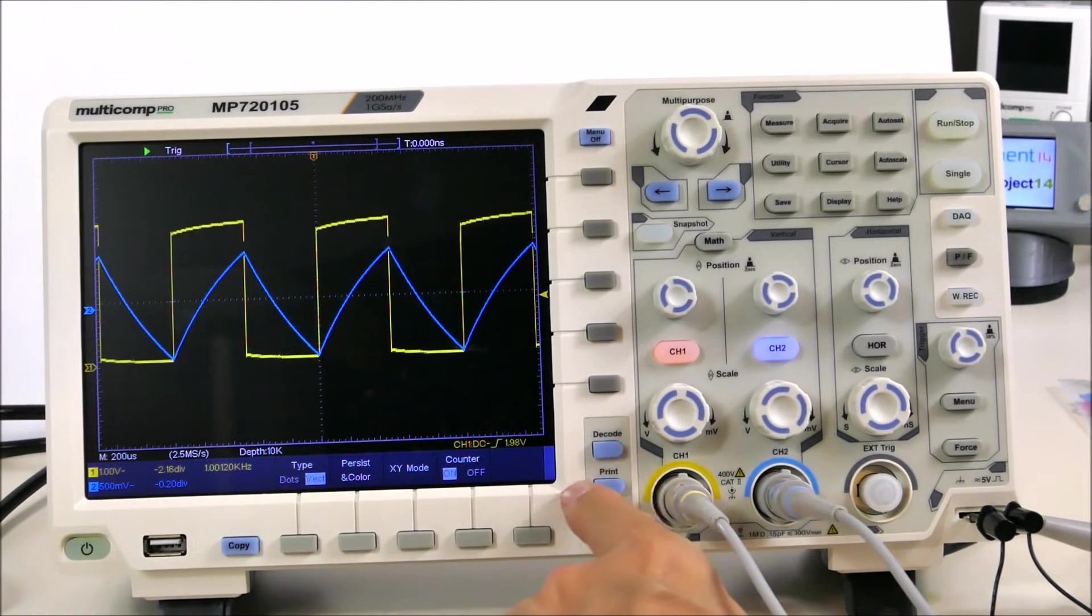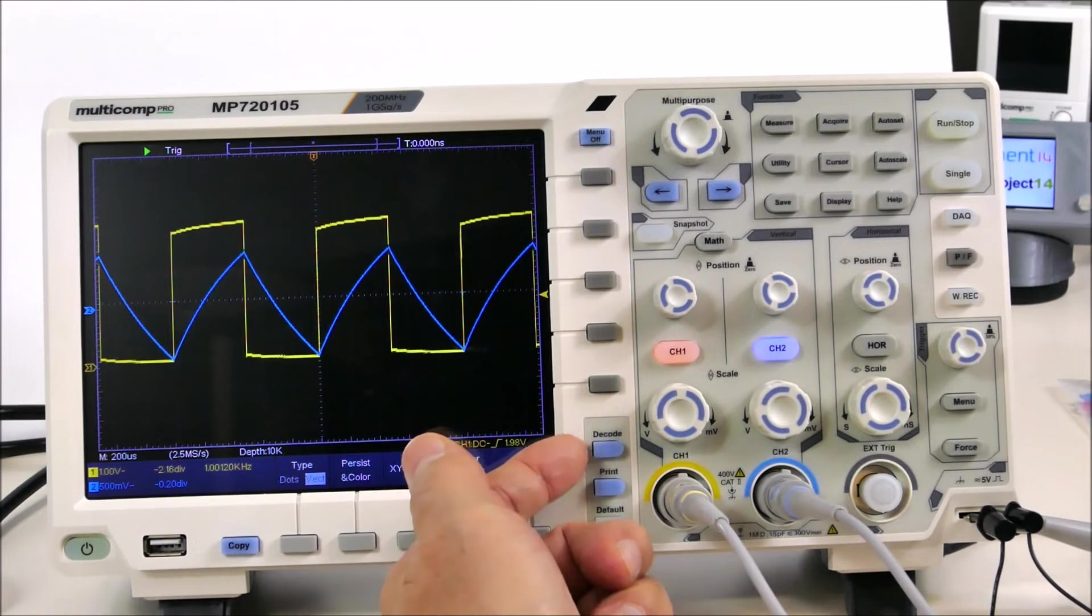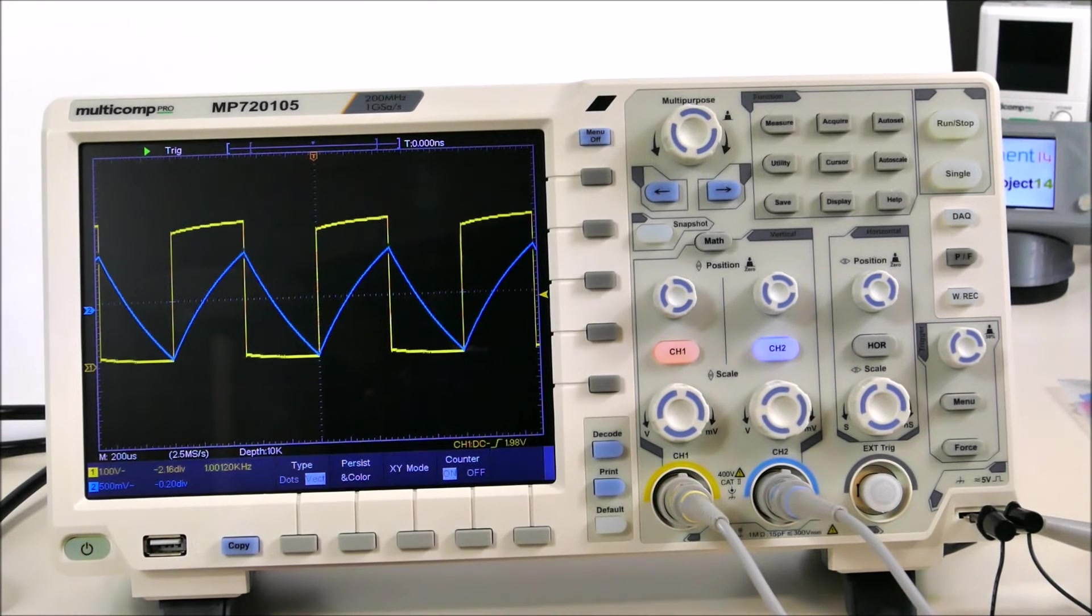On here we have a button to decode serial data streams like I squared C and SPI. There's quite a few nice little functions here. It's gonna take a while for me to get used to all of them, but I like this scope.